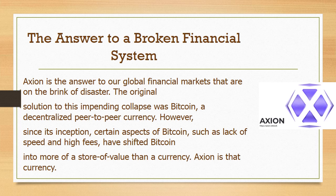The original solution to this impending collapse was Bitcoin, a decentralized peer-to-peer currency. However, since its inception, certain aspects of Bitcoin, such as lack of speed and high fees, have shifted Bitcoin into more of a store of value than a currency. Axion is the currency to address that.